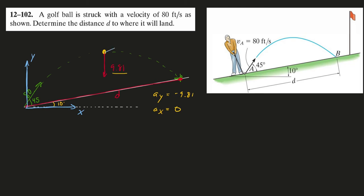If we were to tilt our x and y-axes, then this 9.81 downward acceleration vector would have both a negative y component and a negative x component. So in that case, the acceleration in x would not be zero. In the next video I'll do the same problem with tilted axes to show you how you'd work through that.